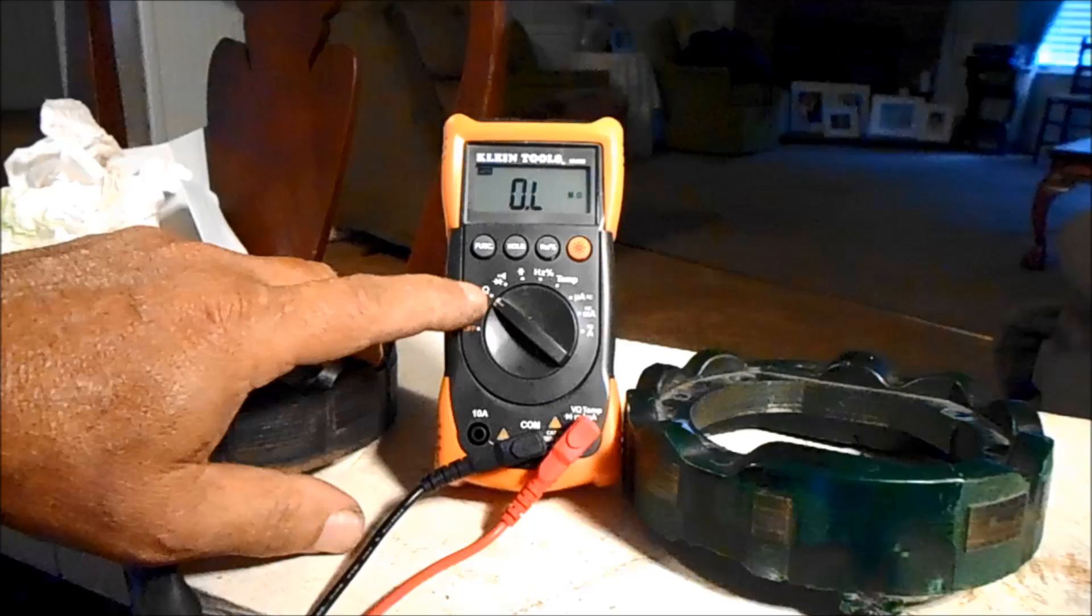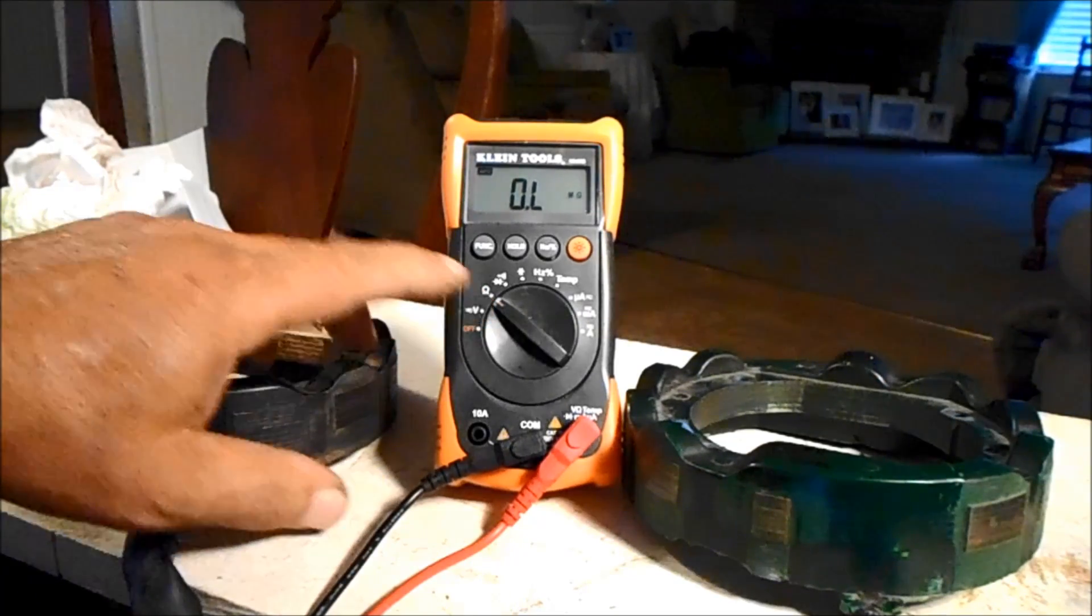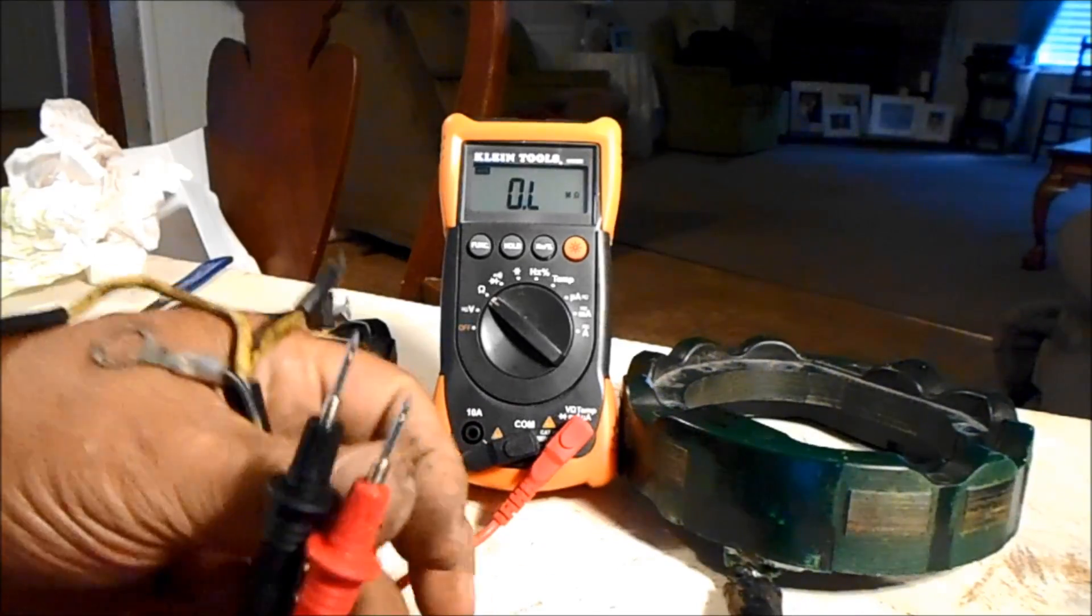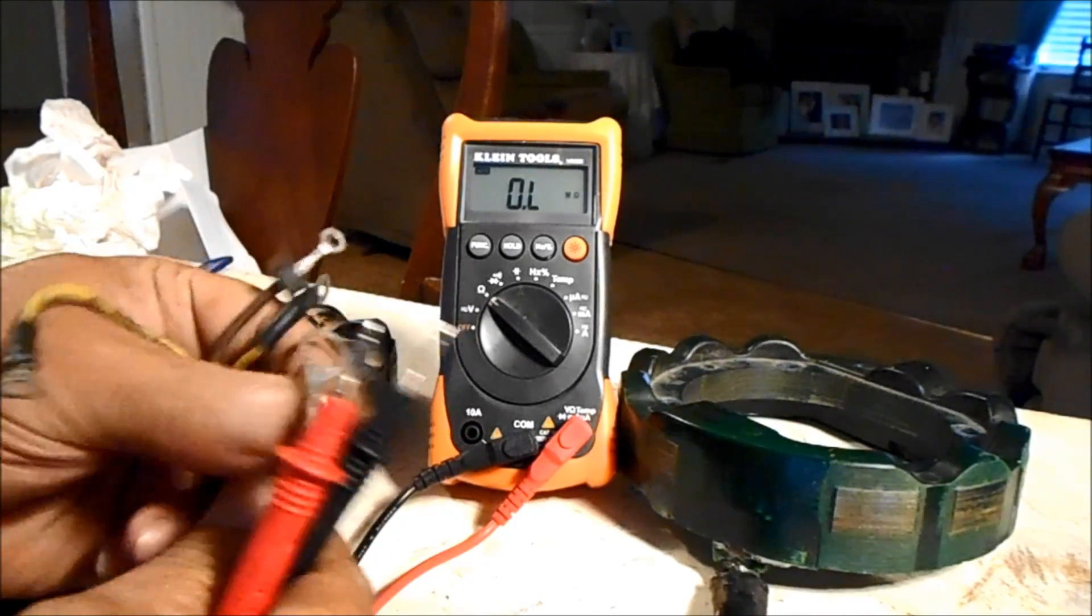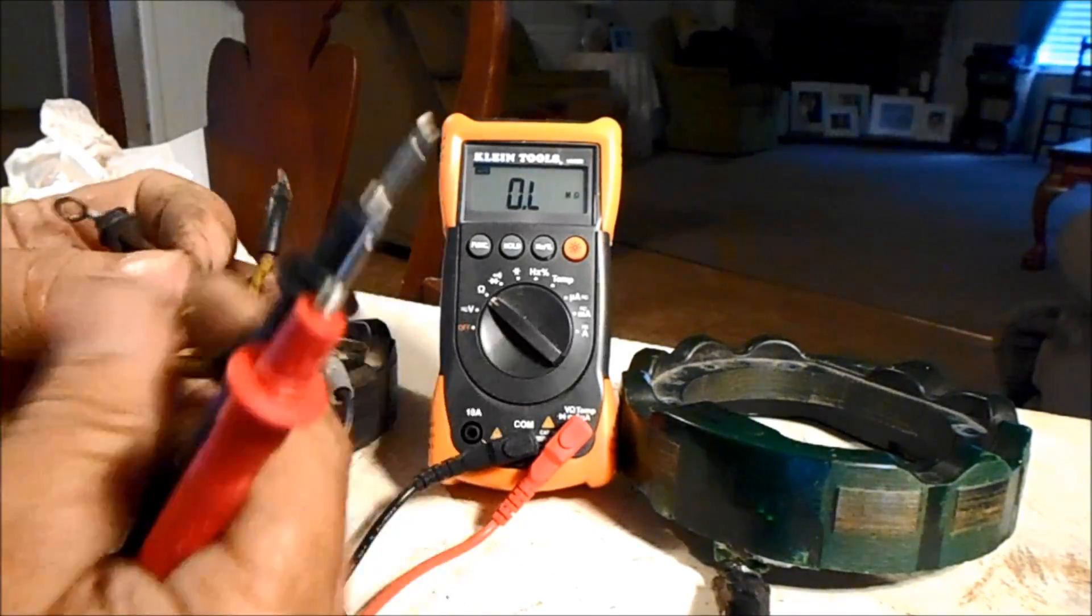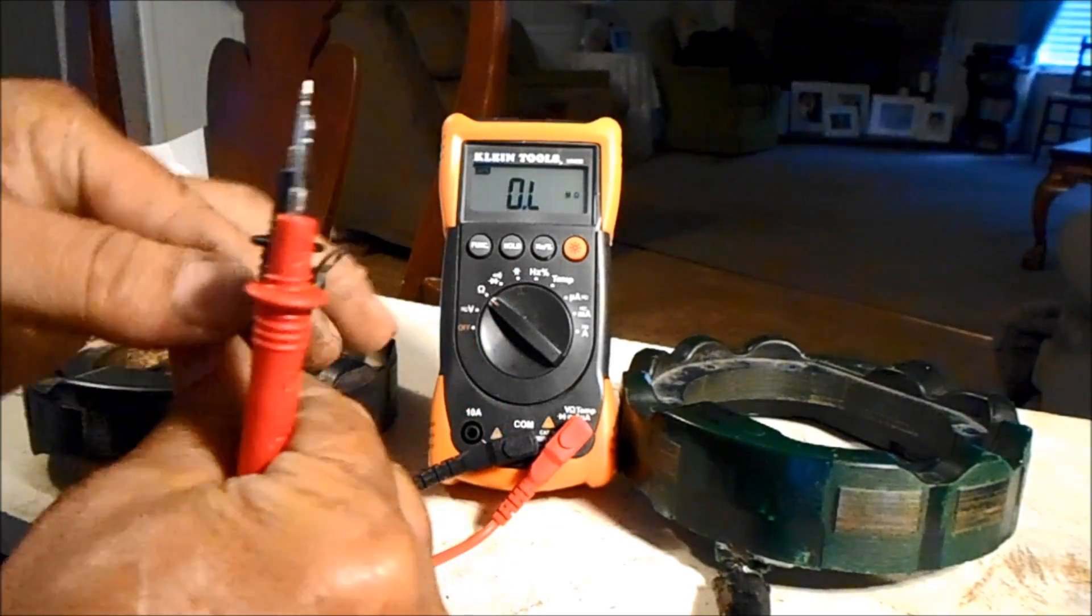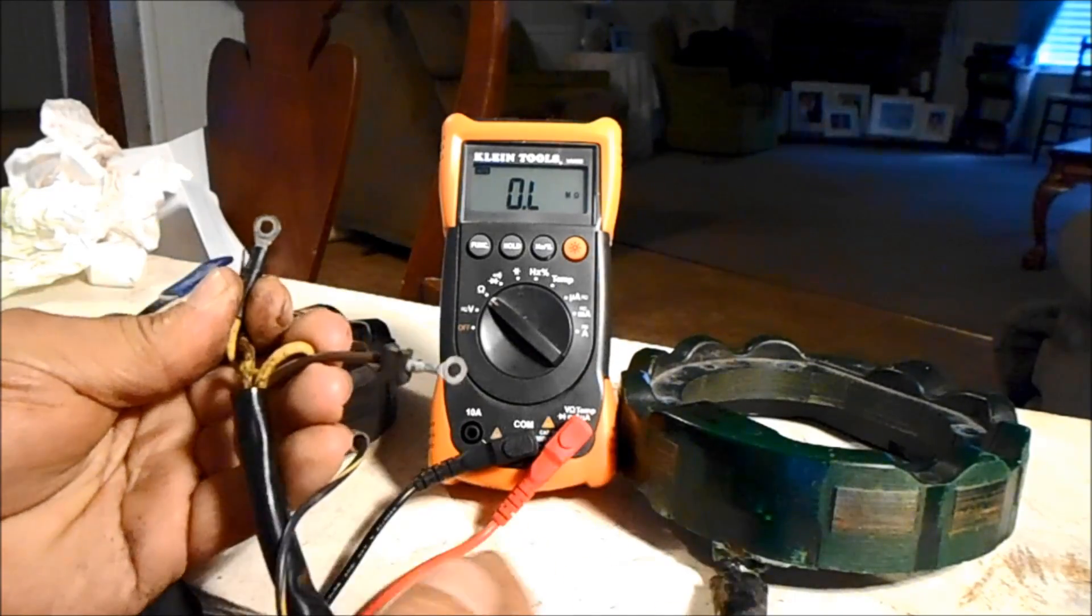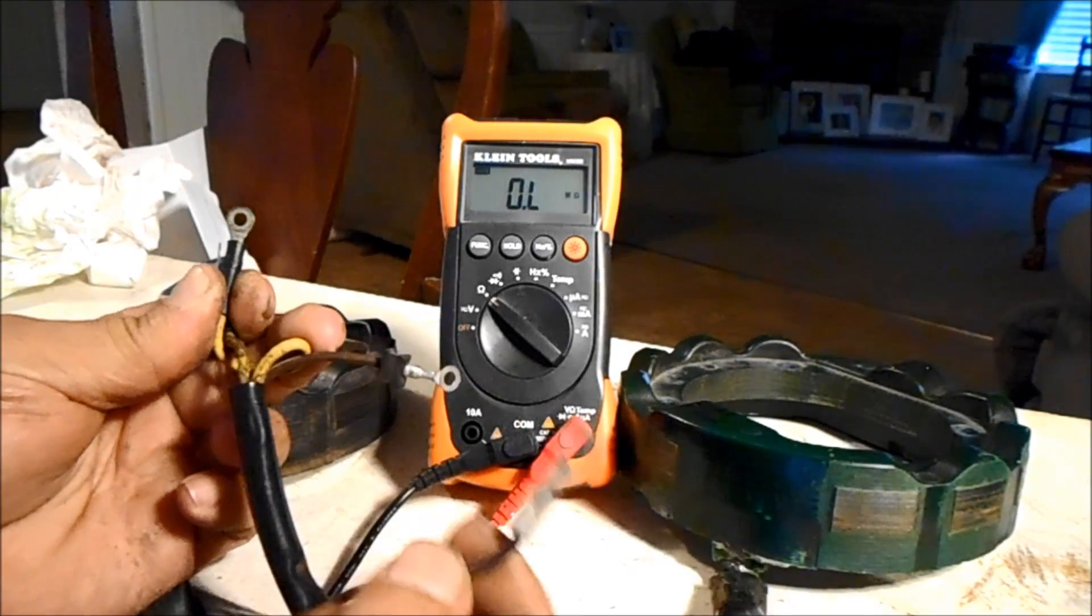What you want to do is set your meter on the ohm signal right there, and I'll start out with these wires here. Now, these are the two yellow wires, and then this is the one that goes to the power pack, and then there's a ground right here.